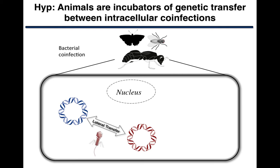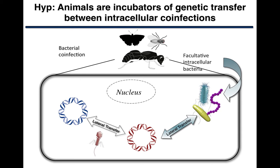The hypothesis is that animals are incubators of genetic transfer between intracellular co-infections — essentially chemostats for gene transfer, even in the most restrictive class of bacteria. We can imagine that inside any animal's cells there may be co-infections of different intracellular bacteria exchanging bacteriophage elements. The source of these elements may come from facultative intracellular bacteria, which infect inside cells but can also exit. Perhaps facultative intracellular bacteria seed mobile elements into the obligate intracellular world, so what's traditionally thought of as a closed niche could be opened.